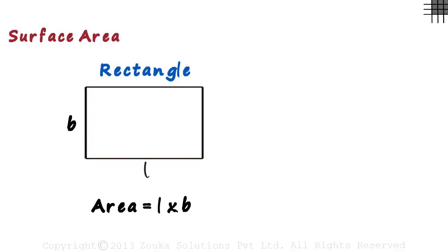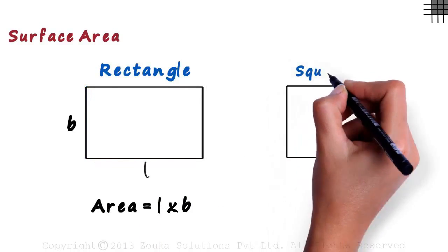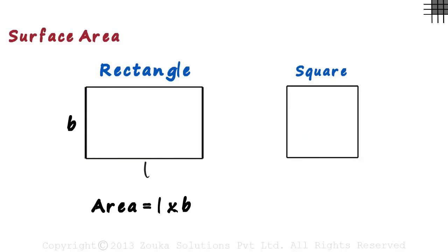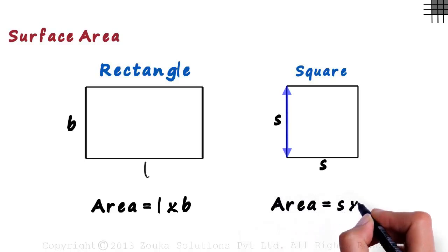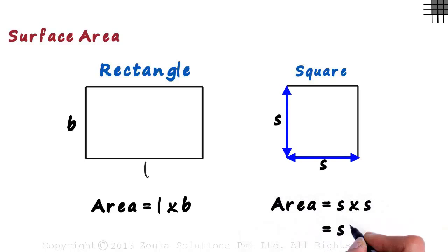A special case of a rectangle is a square. It's a rectangle which has its length equal to its breadth. Let's say both the length as well as its breadth equal s units. Its area will equal s times s, which is s squared units.